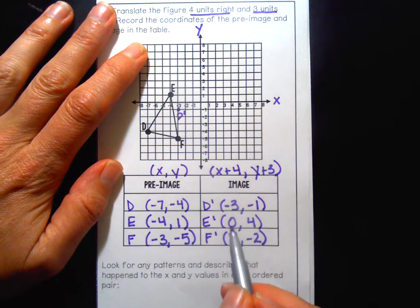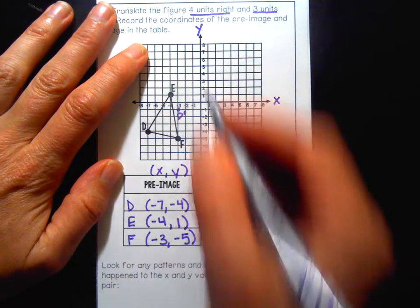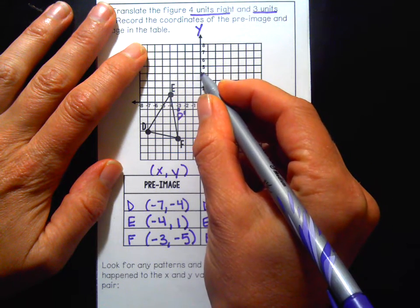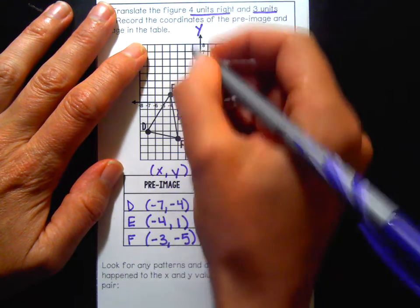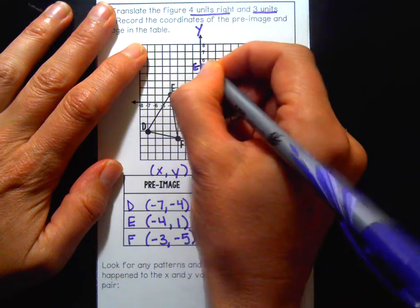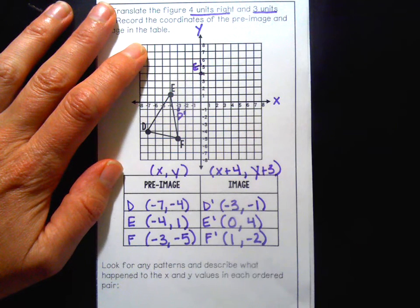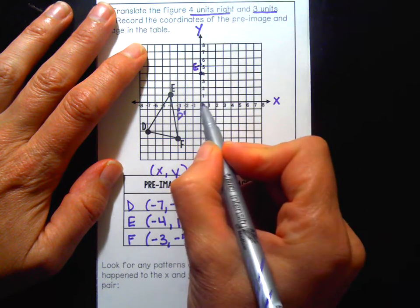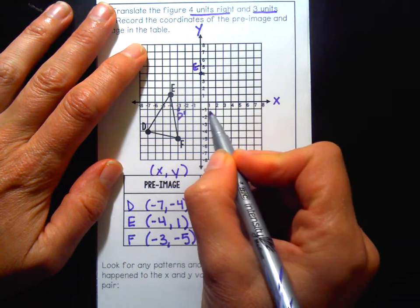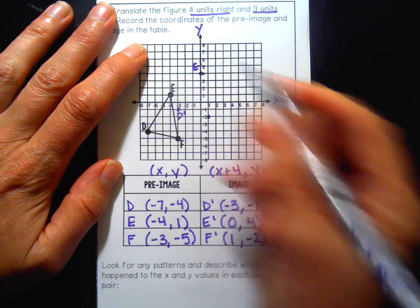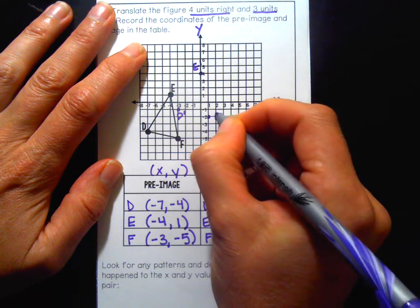E prime, I calculated to be at zero, four. In the lobby zero, up the elevator four. That's E prime. And then F prime, in the lobby one, down in the elevator two. That's F prime.